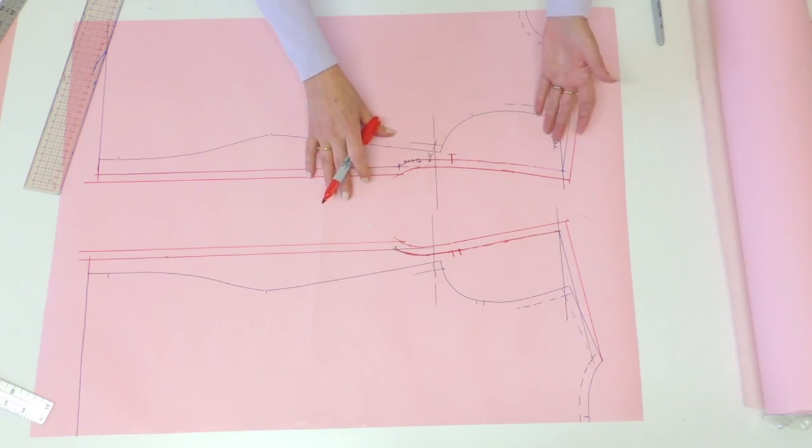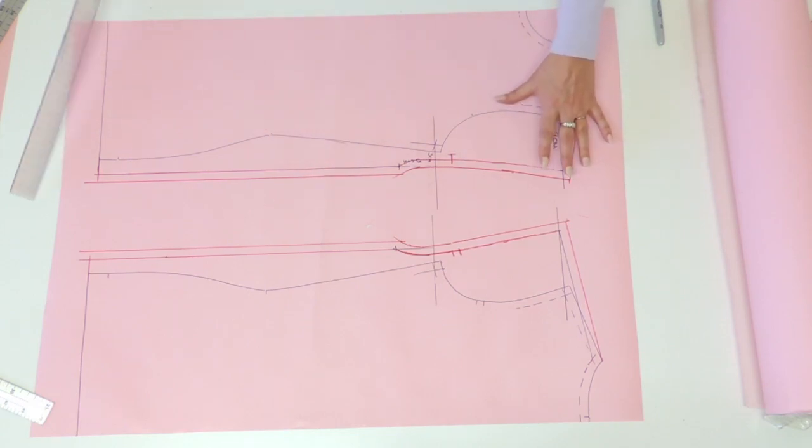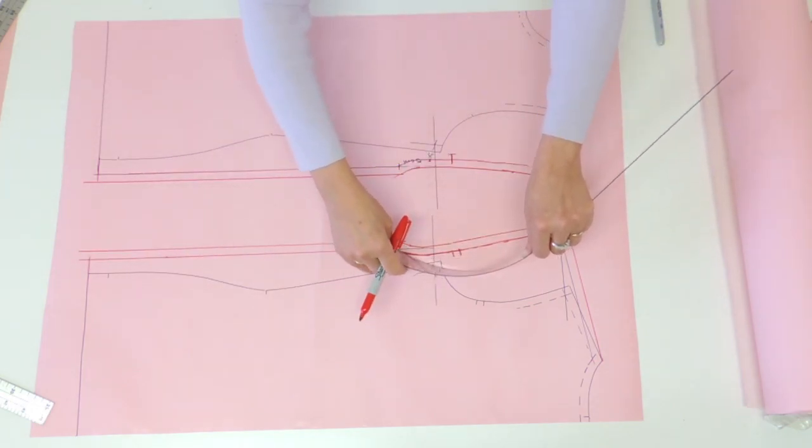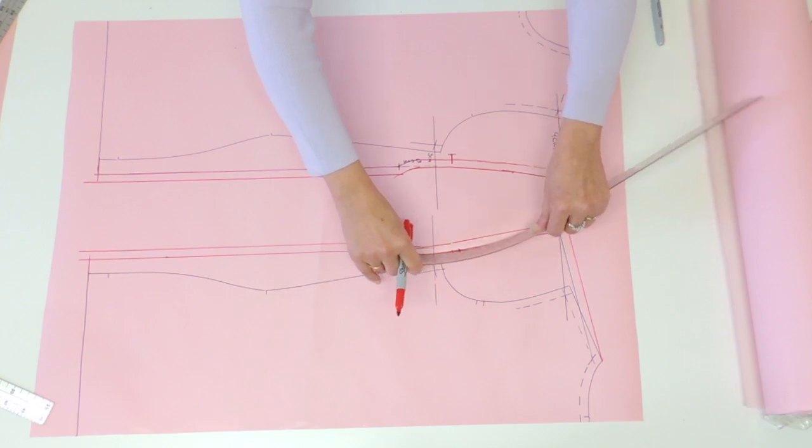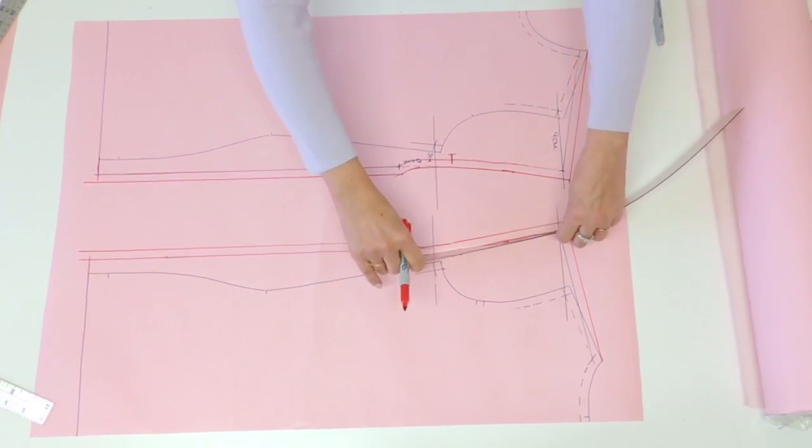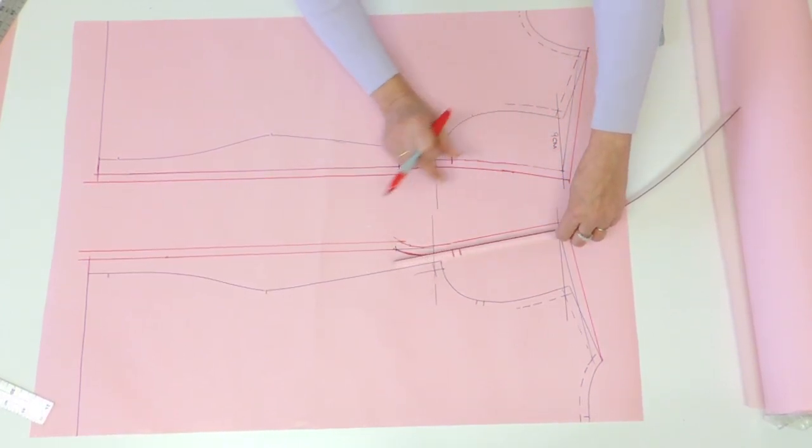Now your drop shoulder pattern is finished. We just have to do the sleeve and to do that I want you to measure from the underarm to the notch, put the measurement on the paper and also mark the full measurement all the way to the shoulder.